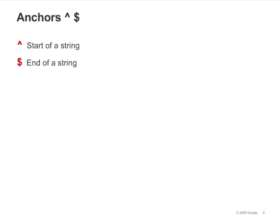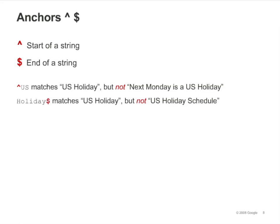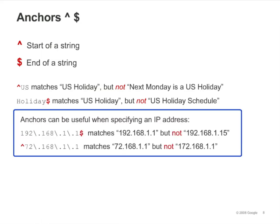The caret signals the beginning of an expression — in order to match, the string must begin with what the regex specifies. The dollar sign says: if there are any more characters after the end of this string, then it's not a match. So, "^US" means start with US — "US Holiday" matches, but "Next Monday is a US Holiday" does not. "Holiday$" means end with holiday — "US Holiday" still matches, but "US Holiday Schedule" does not. Anchors can be useful when specifying an IP address.